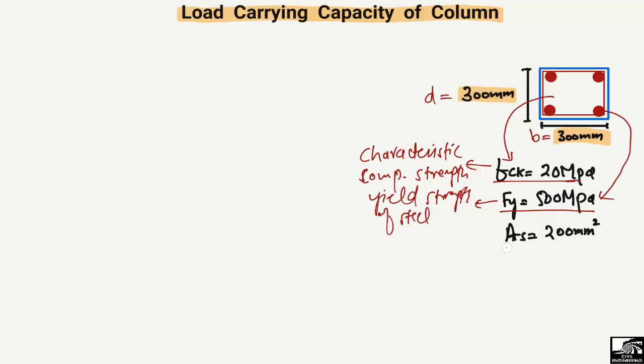The longitudinal area of the steel reinforcement is 200 square millimeters. This is the area of only the longitudinal steel bars — it does not include the transverse bars. These are the main bars: 1, 2, 3, 4 — and their total area is 200 square millimeters.